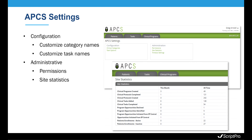APCS settings is a utility used for configuring clinical categories and customizing task names specific to your clinical care. This is also where access privileges are set up for users and user groups and where permissions are assigned. Site statistics provides a real-time snapshot of programs created, protocols created and completed, program opportunities, and patient enrollments for both active and inactive patients.